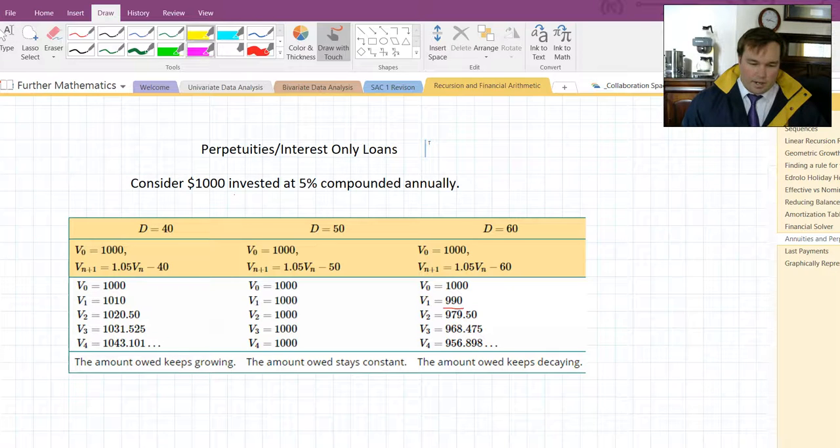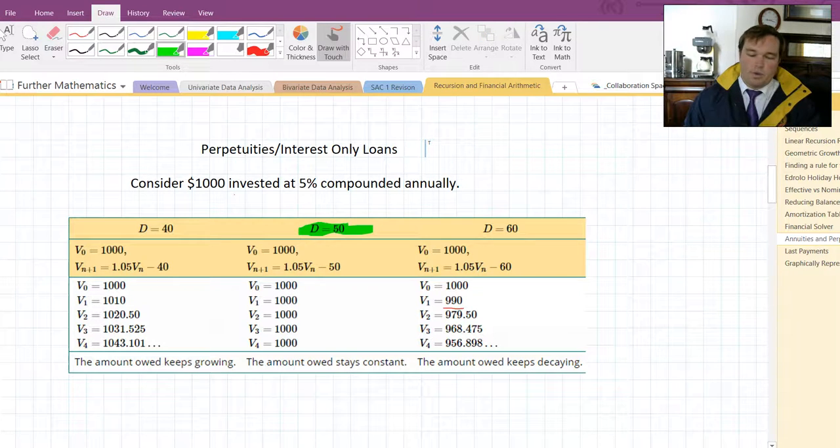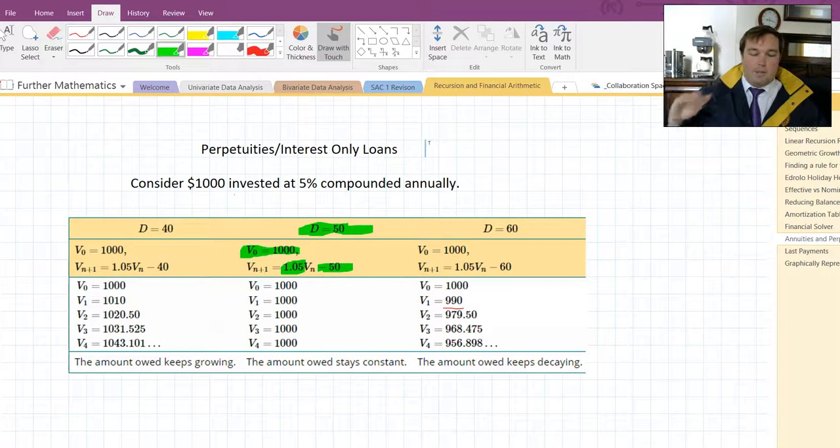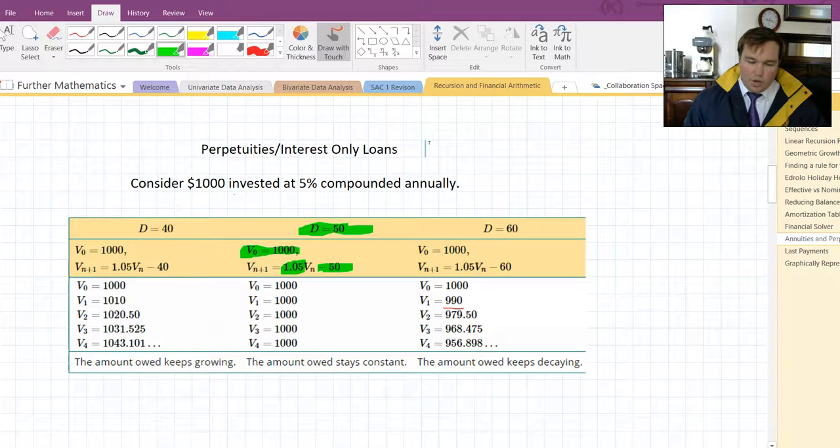Let's take the middle scenario first. The middle scenario is the difference each year is $50, so it means $50 is being withdrawn. The recursion relation that would apply here is V0 is $1,000, then this is increased by 5% and $50 is taken off. So during the year there is an increase of 5% and at the end of the year there is $50 taken off and we are back to $1,000. And you should notice that the value at the end of year 1, end of year 2, end of year 3, etc., continues to be $1,000.